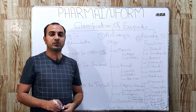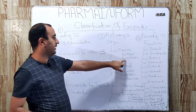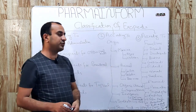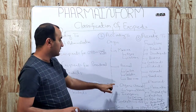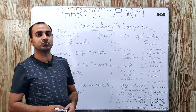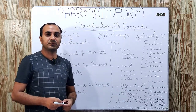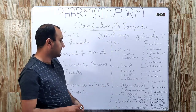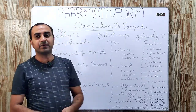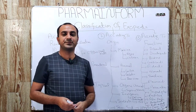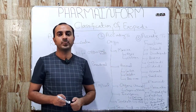The first is marine origin — excipients derived from the sea; examples are agar and chitosan. Next is animal origin — from animals we derive lactose, gelatin, and beeswax. Organic chemicals include sugar and starch. Inorganic chemicals — example is calcium carbonate. Synthetic excipients include PVP, and semi-synthetic excipients include HPMC and HPC, meaning hydroxypropylmethylcellulose. Don't worry, we will discuss each in detail.